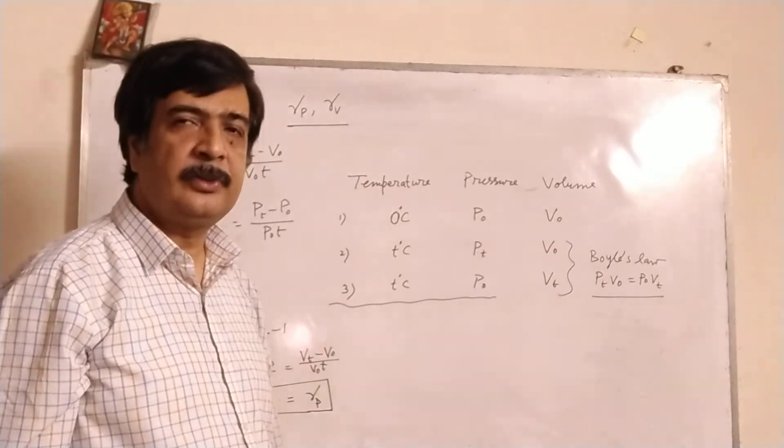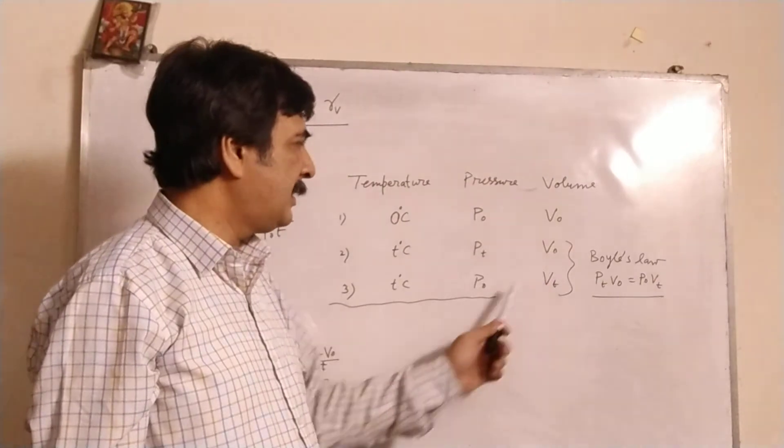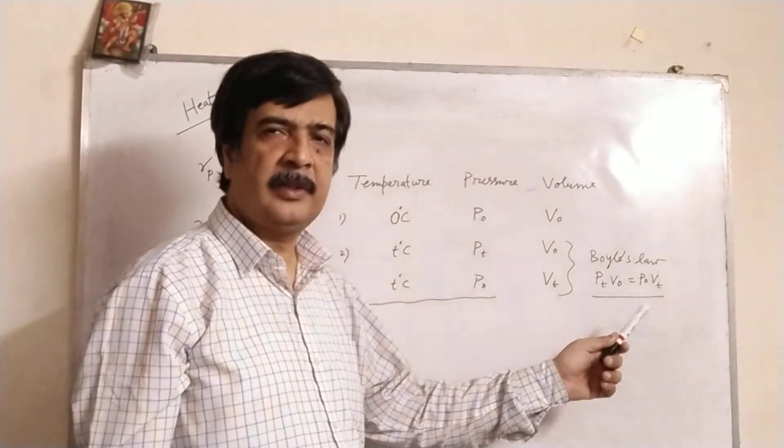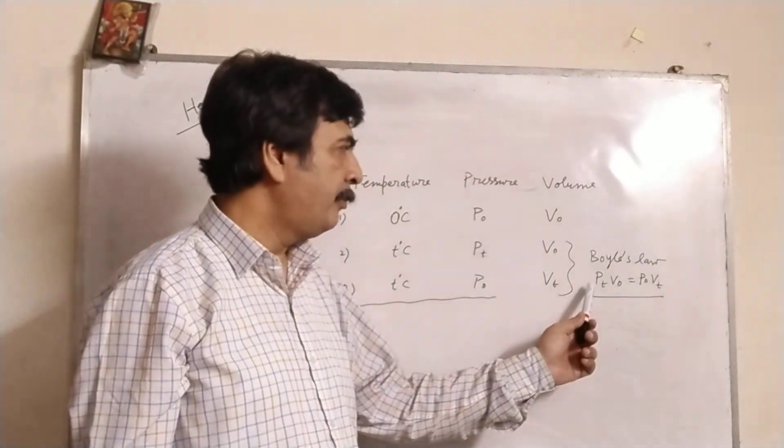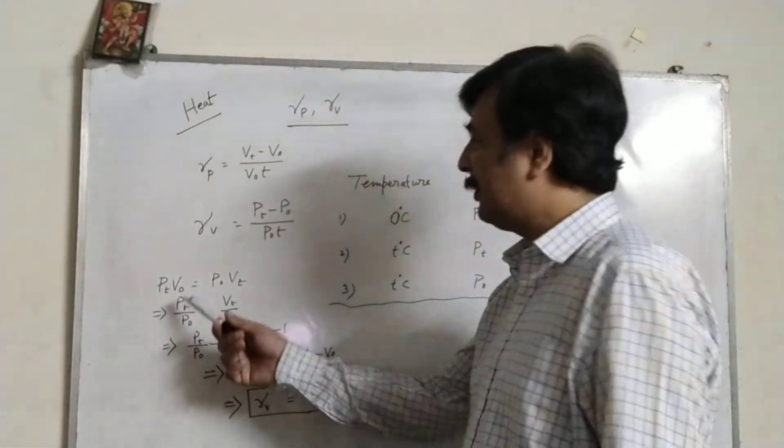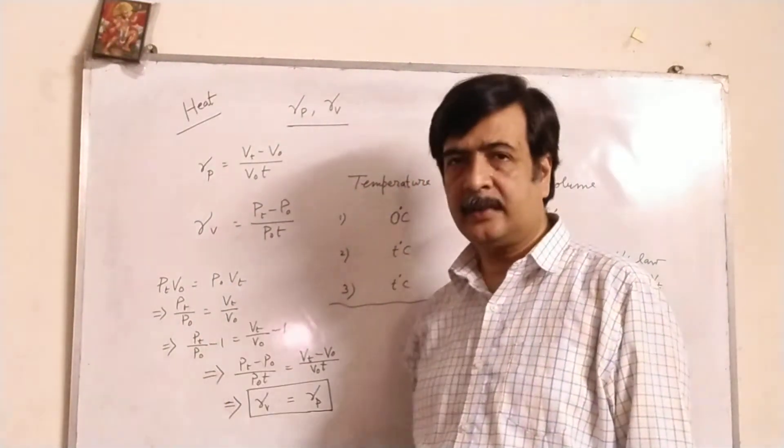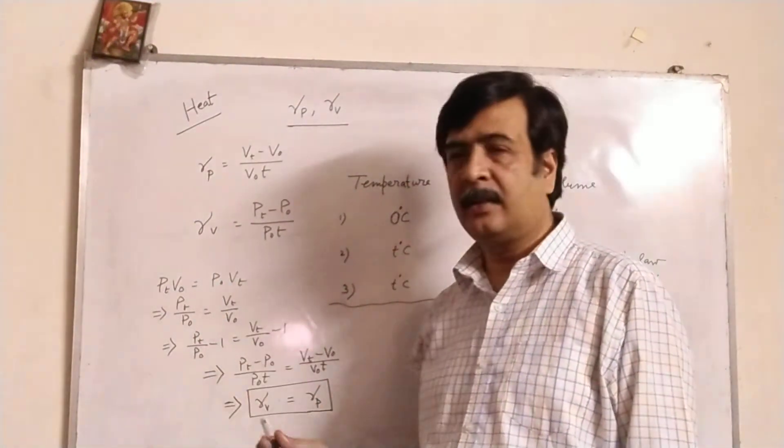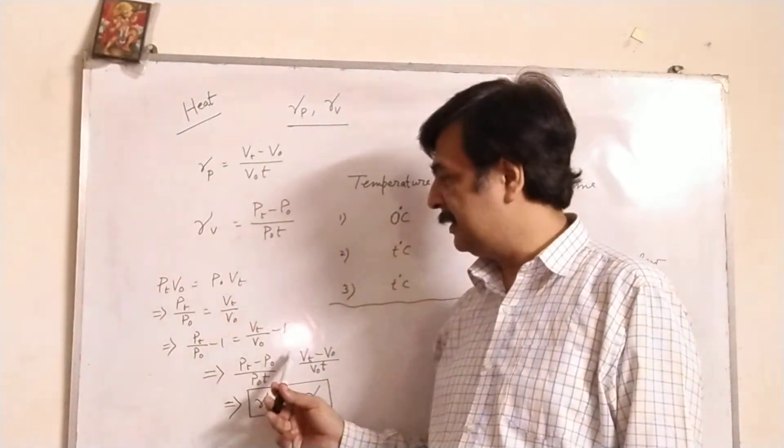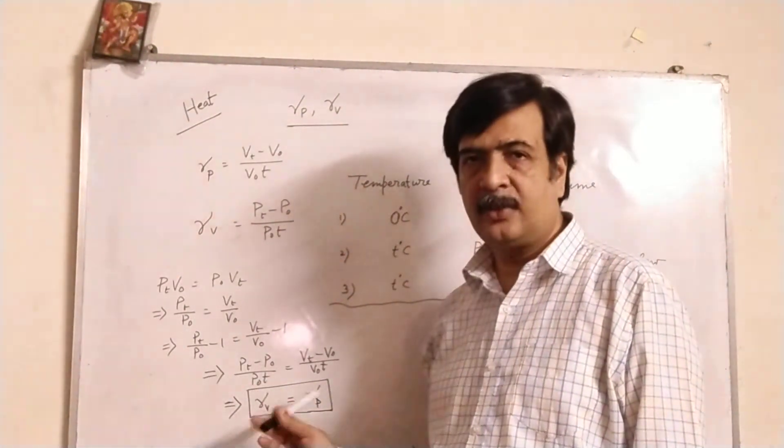We know P_1V_1 equals P_2V_2, so P_t × V_0 equals P_0 × V_t. Therefore P_t/P_0 equals V_t/V_0. Take minus one from both sides: (P_t - P_0)/P_0 equals (V_t - V_0)/V_0. Now multiply with t at the denominator on both sides, and therefore gamma_v equals gamma_p.